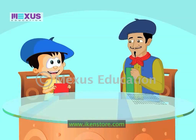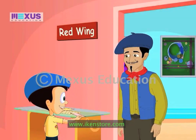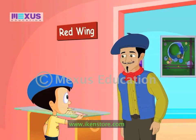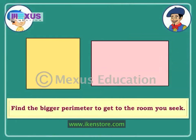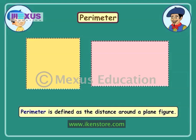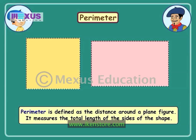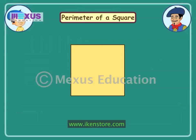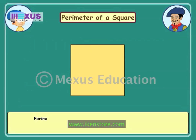What do you think that means? Let's go to the red wing of the gallery. Maybe our next clue lies there. These shapes seem to be our next clue. Find the bigger perimeter to get to the room you seek. What is perimeter? Perimeter is the distance around a plane figure. It tells us about the total length of the sides of any shape. We need to add the lengths of all the sides to get the perimeter.